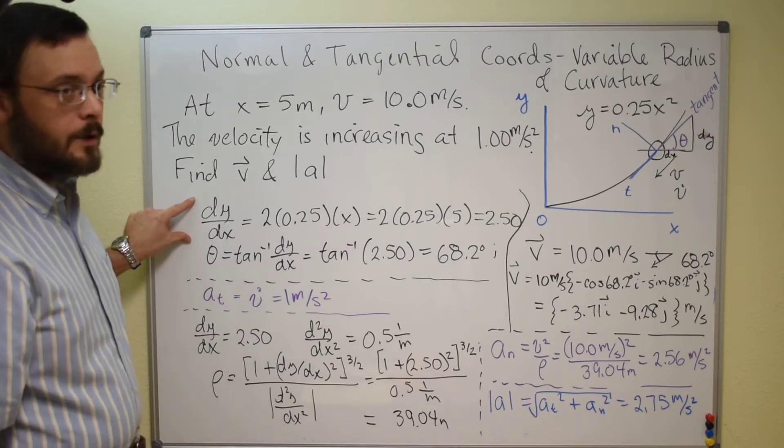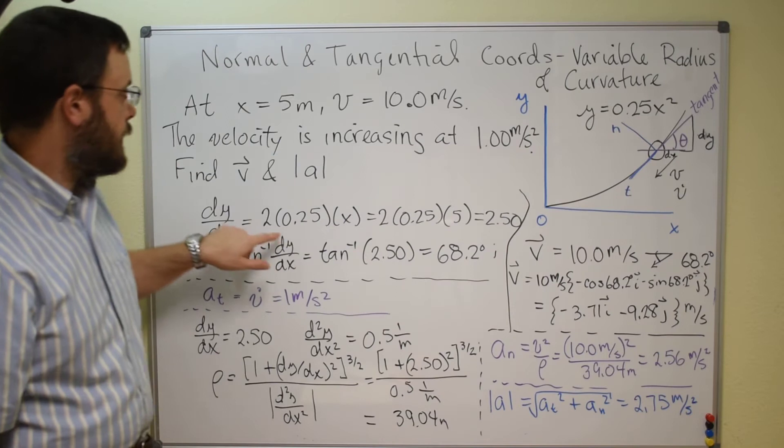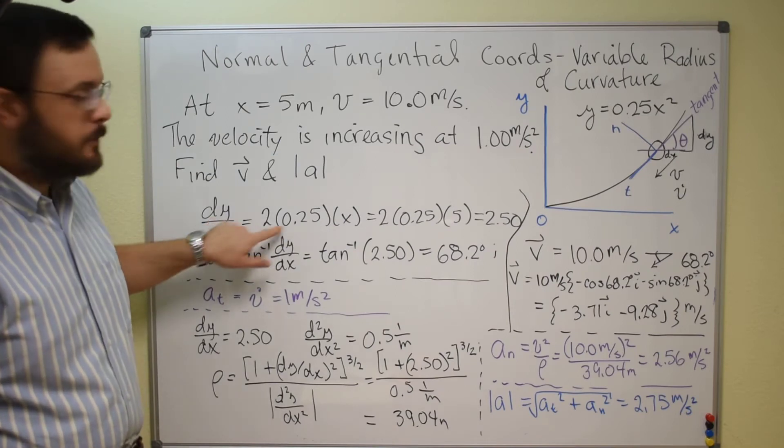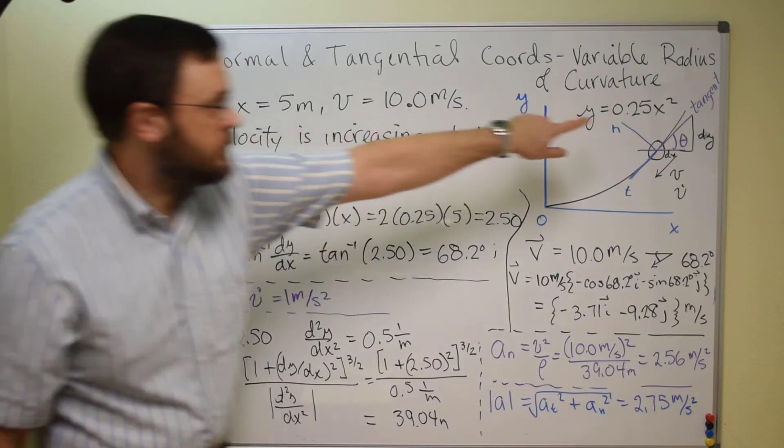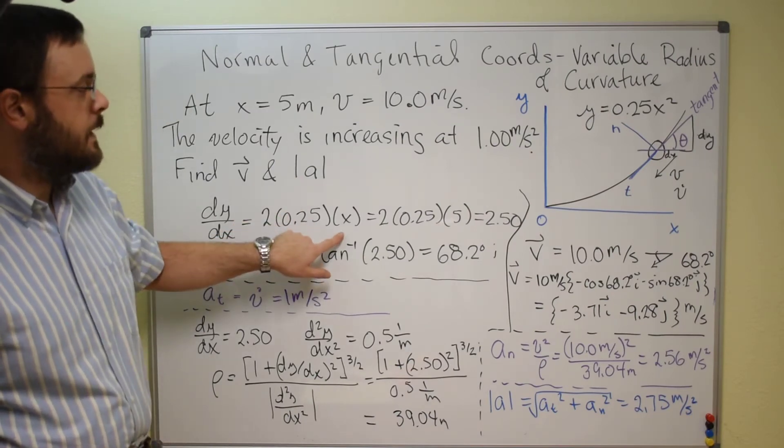So if we do dy over dx, and go ahead and use this function and get that derivative, that'll be the 2 that's up here. We'll come down and sit here, so it'll be 2 times 0.25 times x.